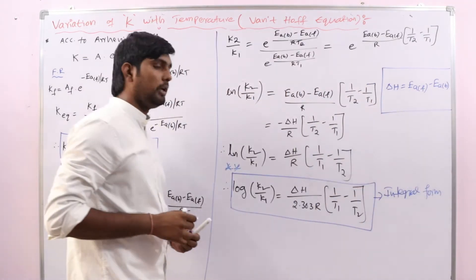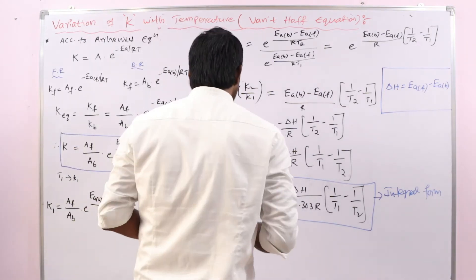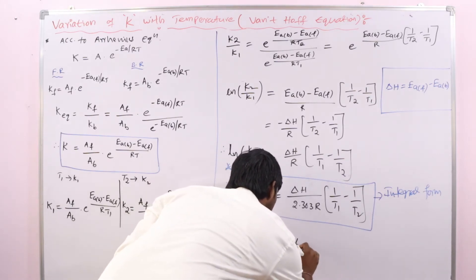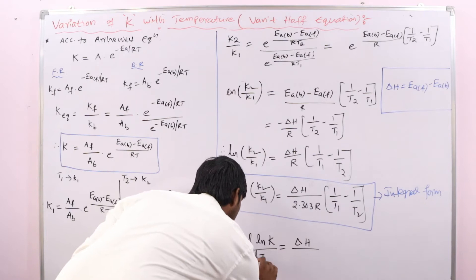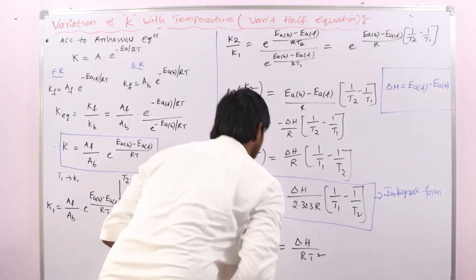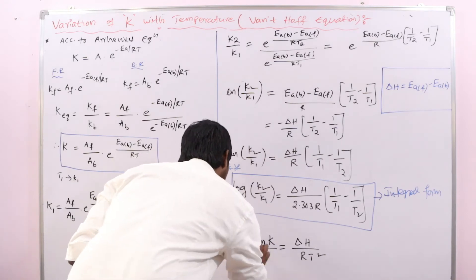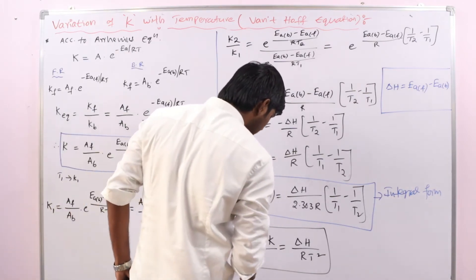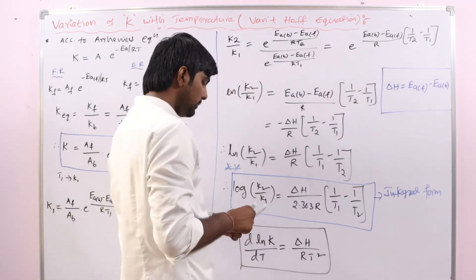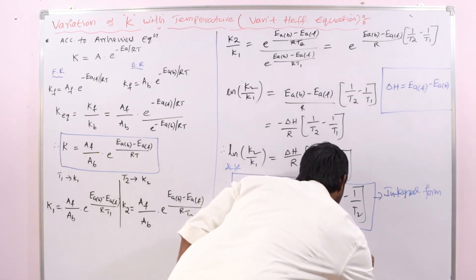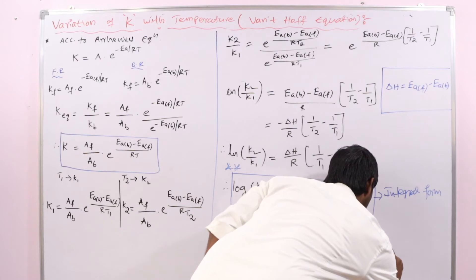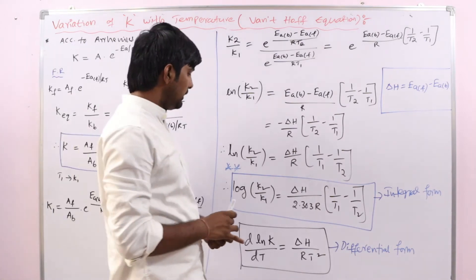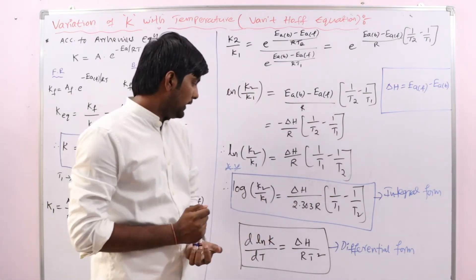The differential form of the Van't Hoff equation is: d(ln K)/dT equals ΔH by RT². This is the differential form, while log(K2/K1) = ΔH/(2.303R) × (1/T1 − 1/T2) is the integral form.